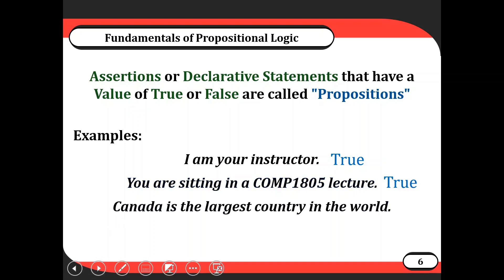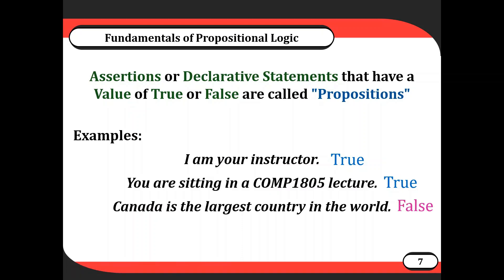Another example: 'Canada is the largest country in the world.' We should specify by geography or by population. Even by geography, Russia may beat it — it really depends on the politics. But regardless, if we knew the facts, we would know precisely whether Canada is in fact the largest country in the world.